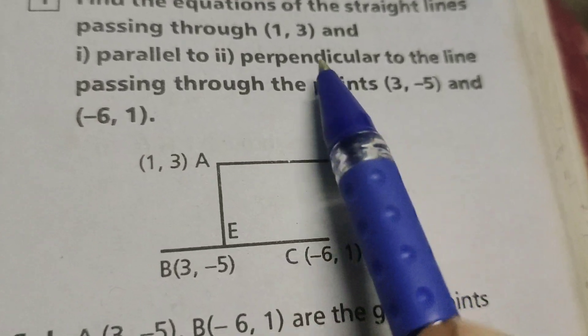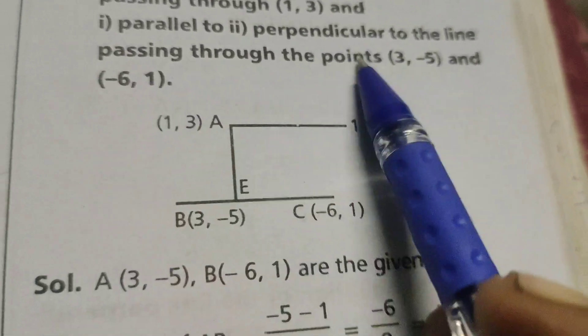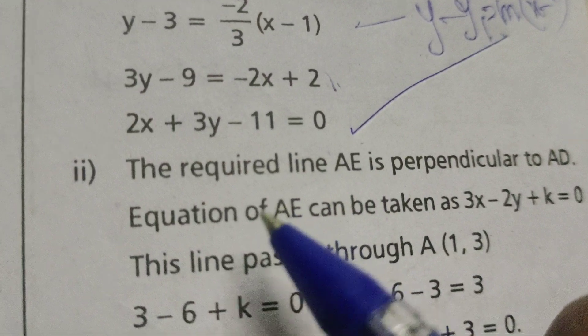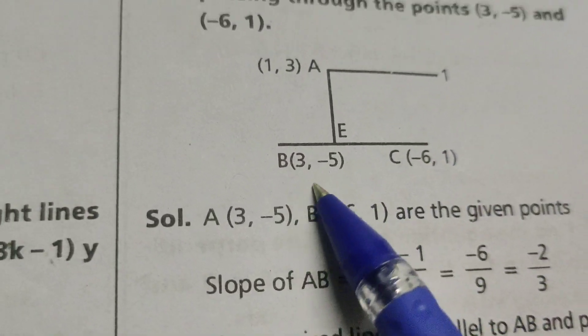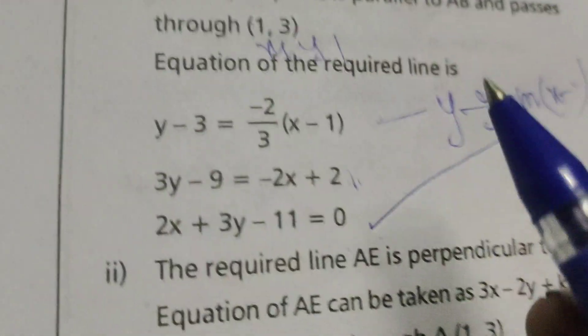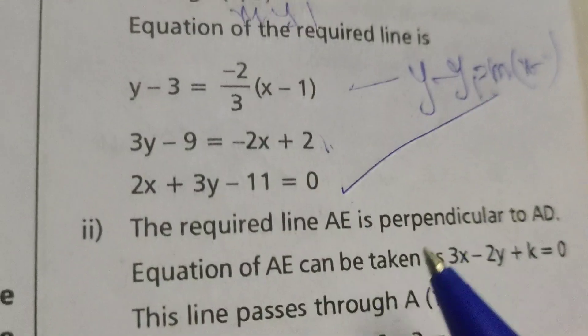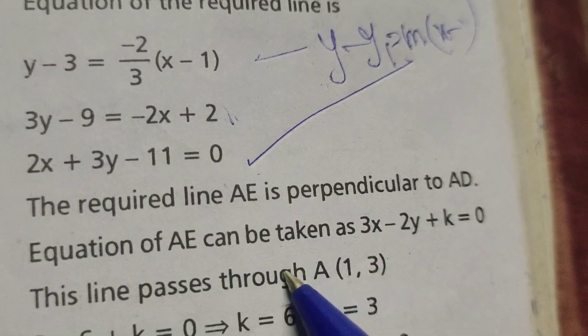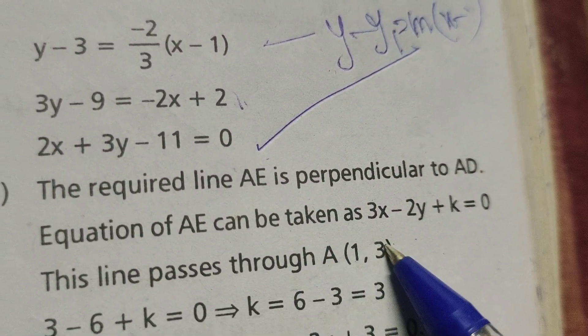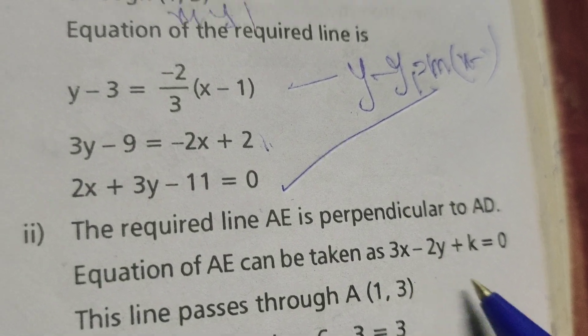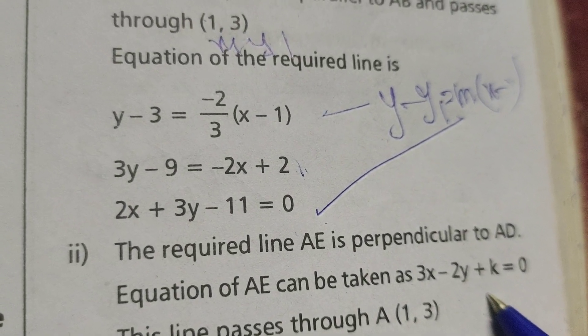Find the equation of the line perpendicular to these points. Then the required line AE is perpendicular to AD. Equation of AE we taken is 3x minus 2y plus k equals to 0.